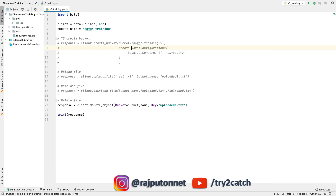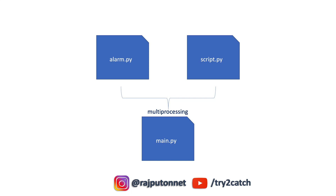In this video I'm going to develop a template for this. As you can see on the screen, we have three scripts: first is alarm.py, second is script.py, and we are going to use multi-processing. We also have main.py. In alarm.py we'll create code that checks the expected execution time and checks in the background that the current time does not exceed the expected runtime. In script.py we'll have our actual script code, and in main.py we'll call both scripts.